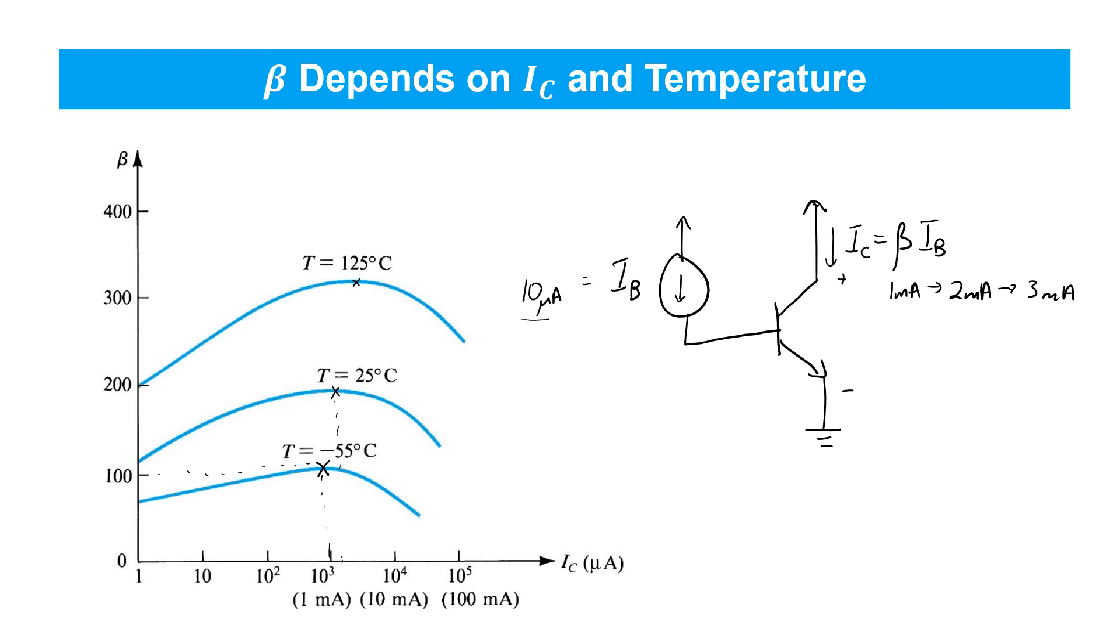The final point to make here is that this effect of thermal runaway is unique to BJTs. It doesn't arise in MOSFETs where generally as the temperature increases, the drain current that flows decreases.